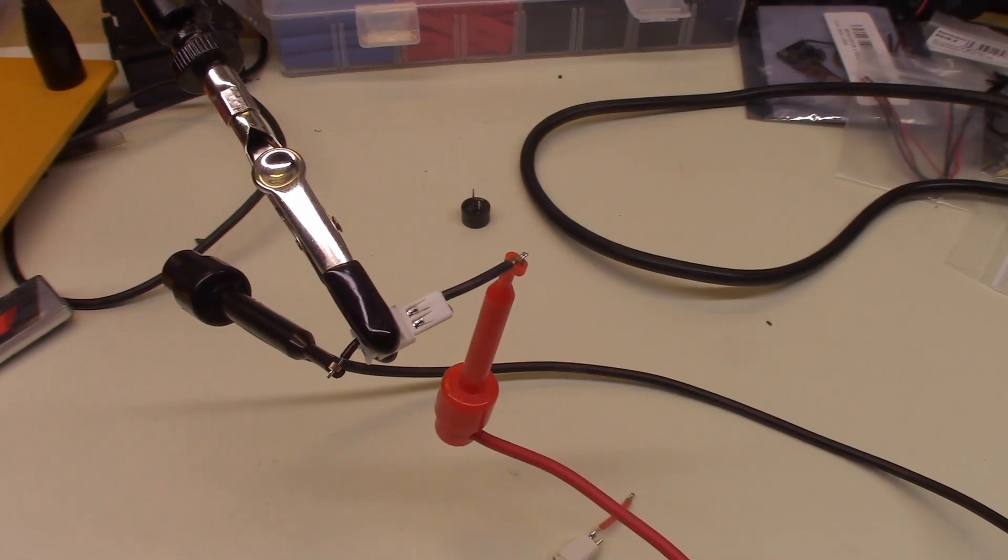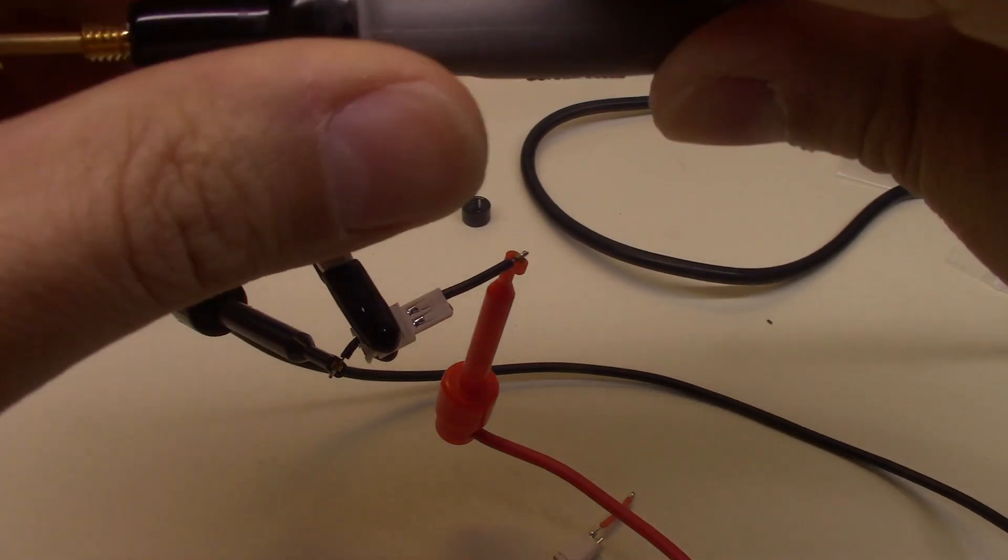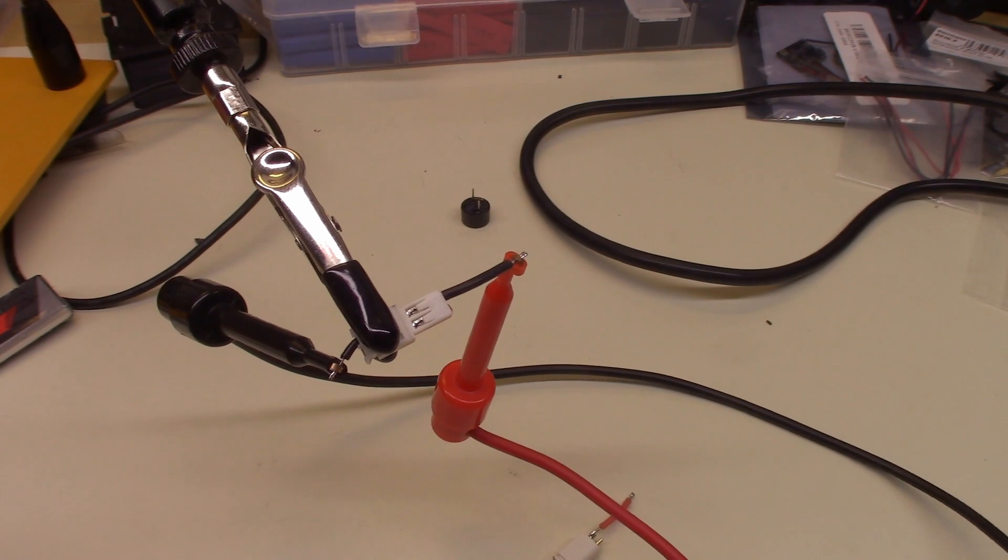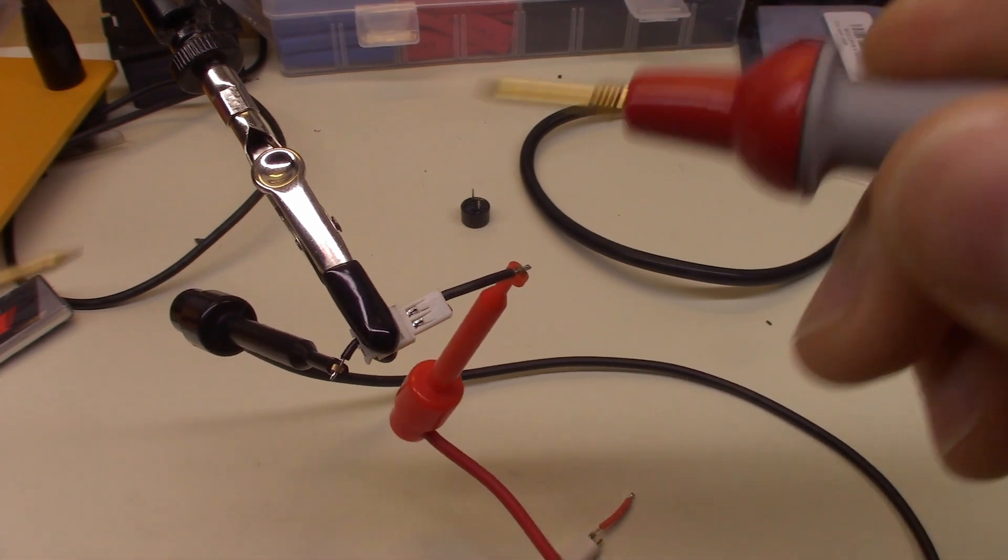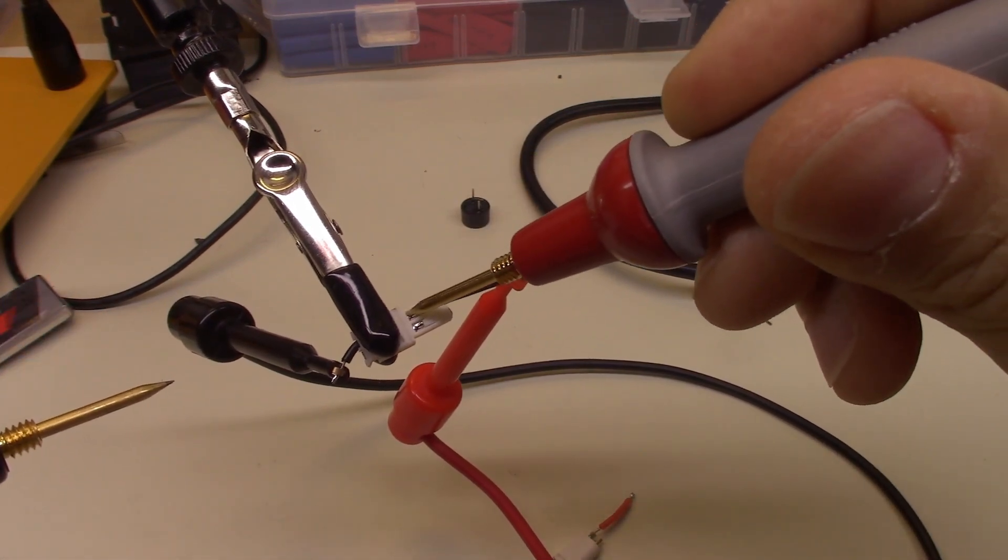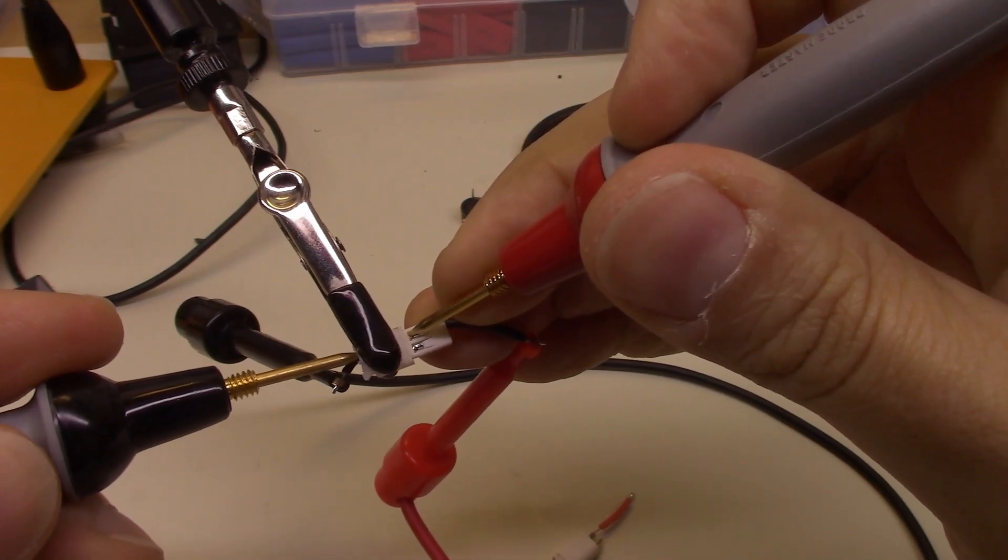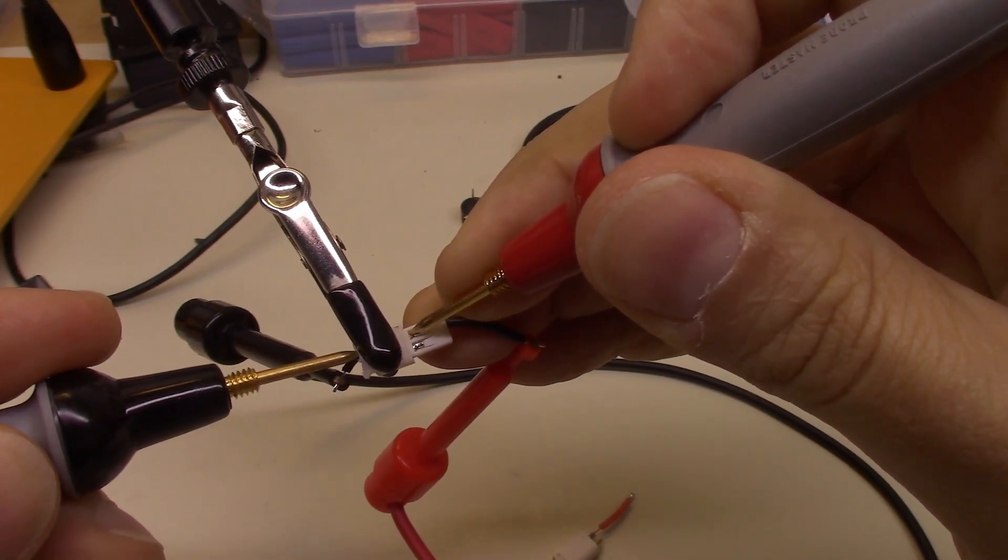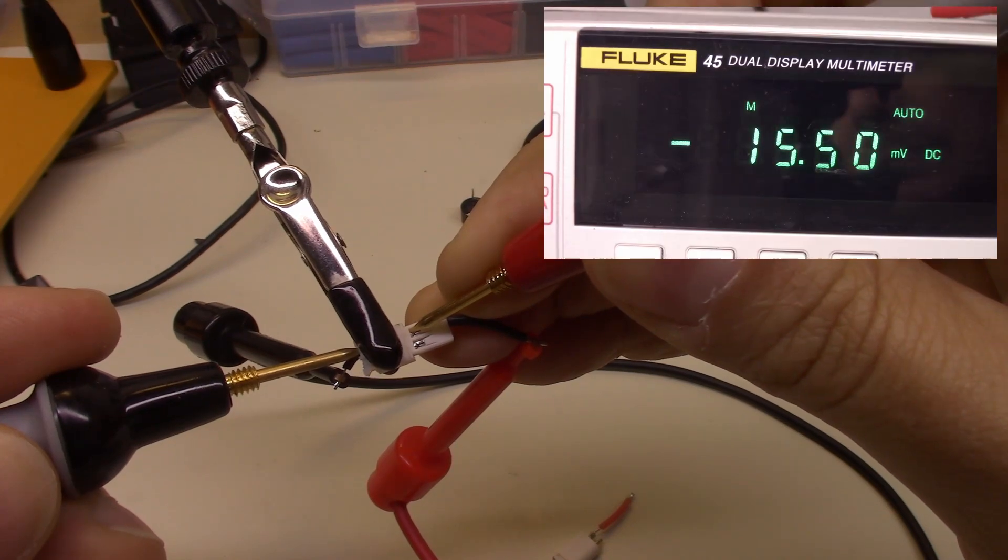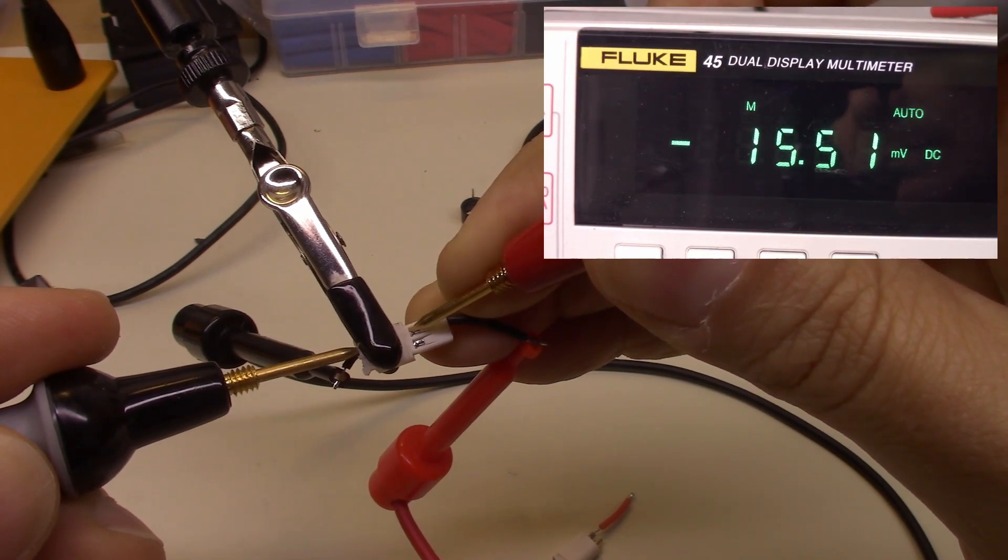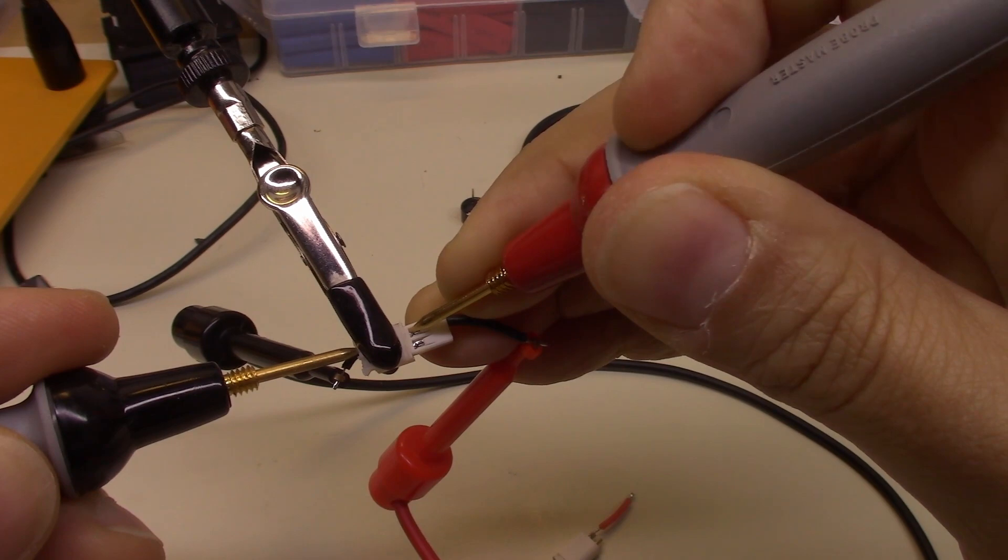Alright, so 4.5 amps. This is the PH-2 connector, and I'm going to be measuring just the connector itself. So we'll go from this point right here to this point right here, and as you can see, we've got 13, 14-ish millivolts, and that's the voltage drop right across the connector itself at 4.5 amps.